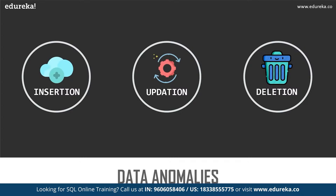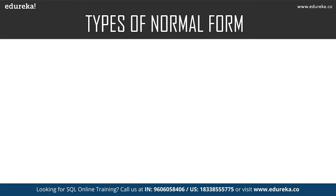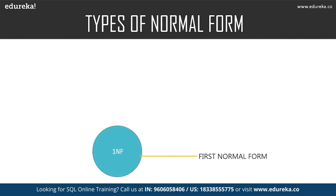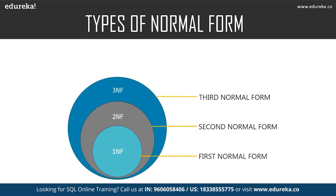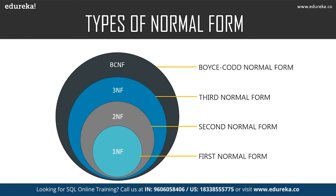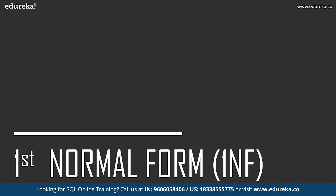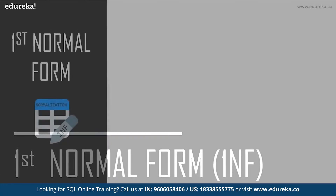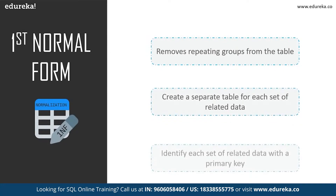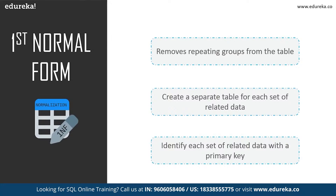So these were some of the problems that occurred while managing data. To eliminate all these anomalies, normalization came into existence. There are many normal forms still under development, but let's focus on the basic and essential ones: First Normal Form, Second Normal Form, Third Normal Form, and Boyce-Codd Normal Form. In First Normal Form, we tackle the problem of atomicity. Atomicity means values in the table should not be further divided — in simple terms, a single cell cannot hold multiple values. If a table contains composite or multi-valued attributes, it violates the First Normal Form.